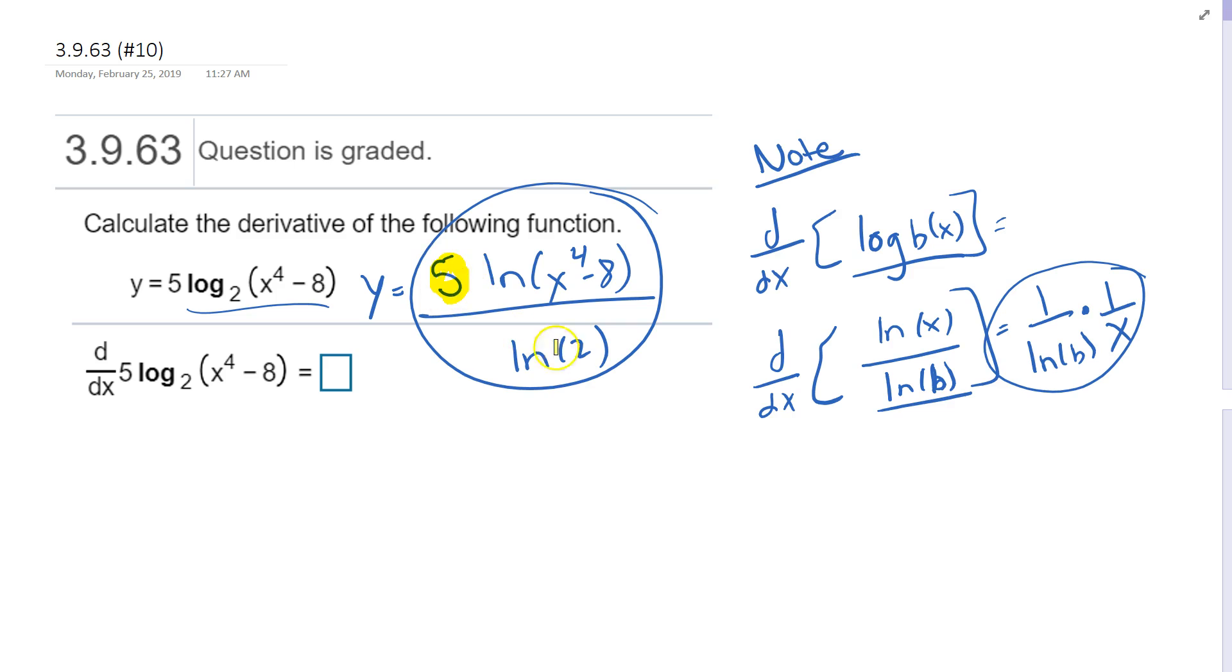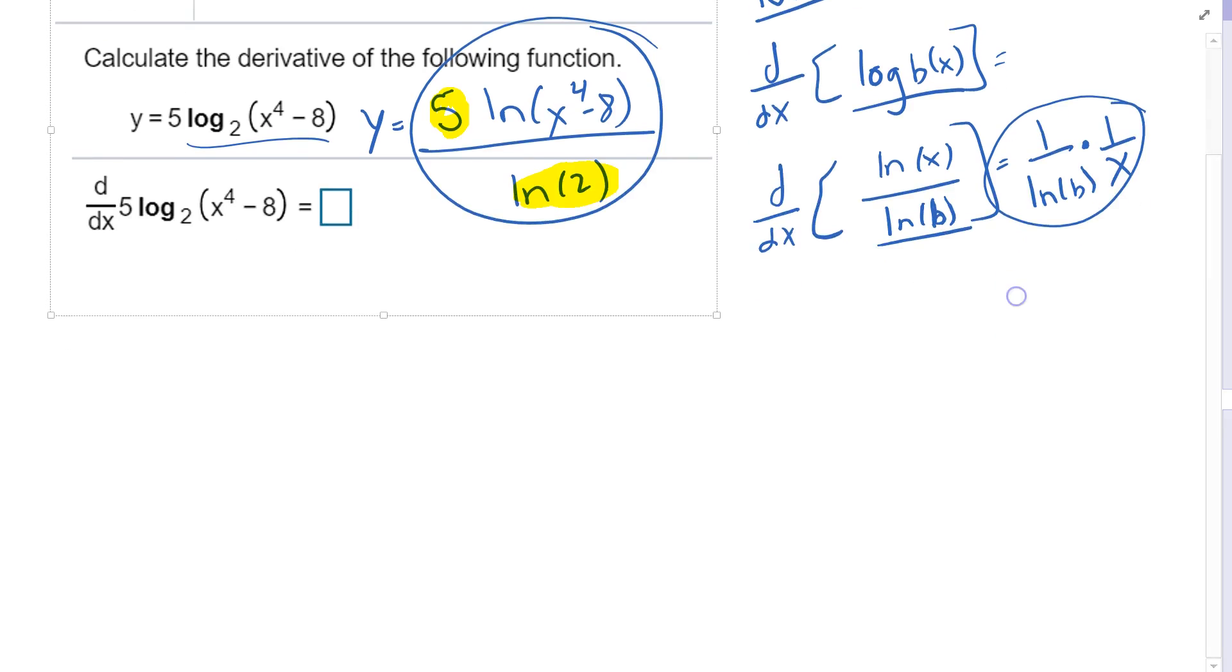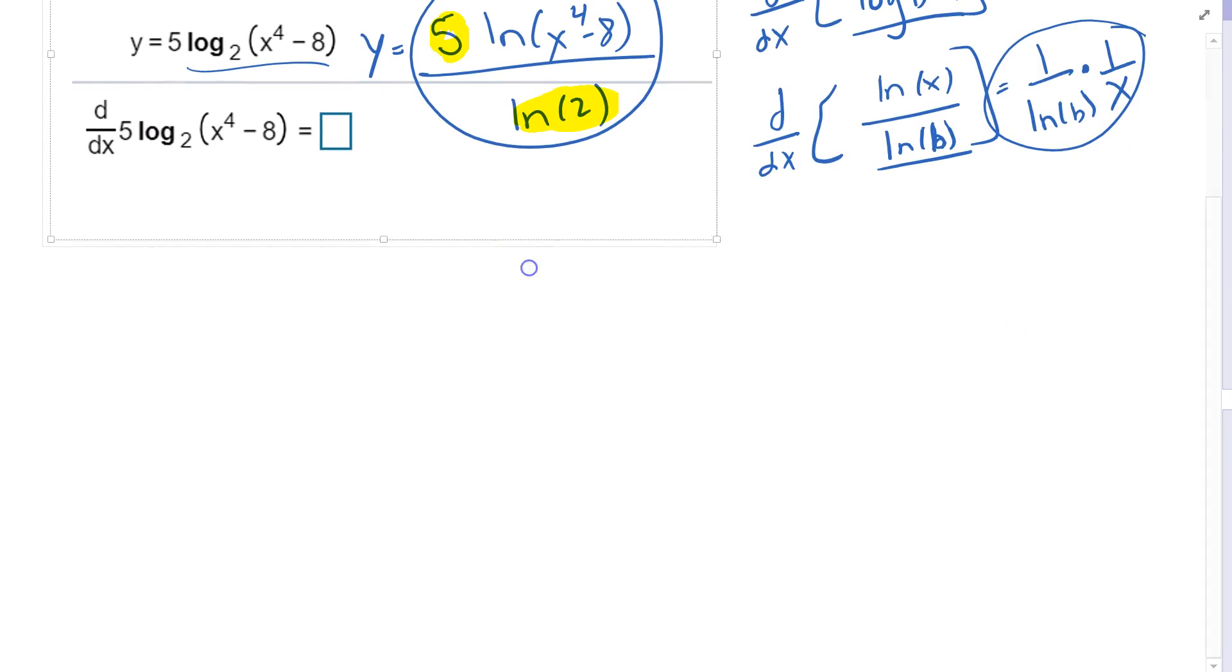The 5 and the ln of 2 are constants, so you can just pull them out when I take the derivative. So the derivative of this function, y prime, is going to be 5 over ln of 2, that's a constant.